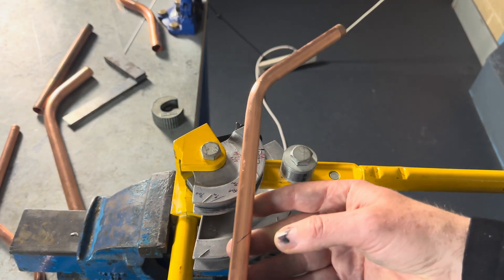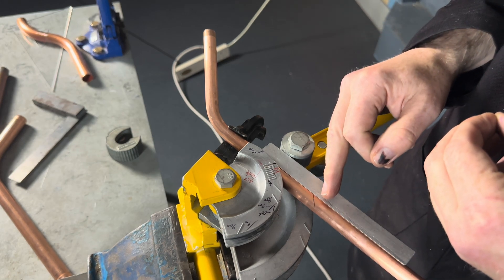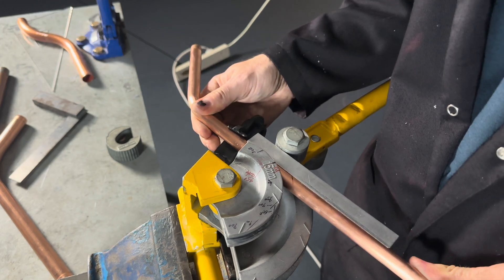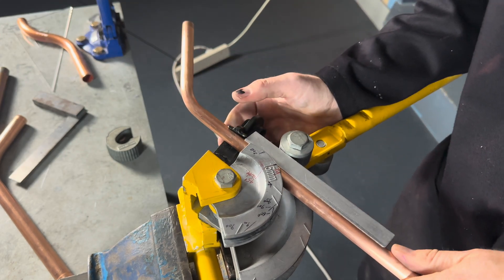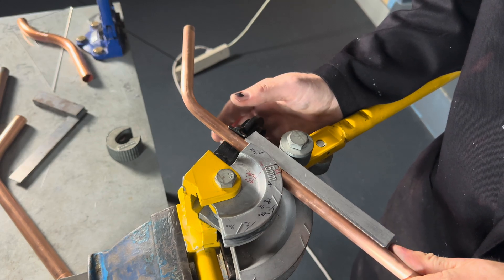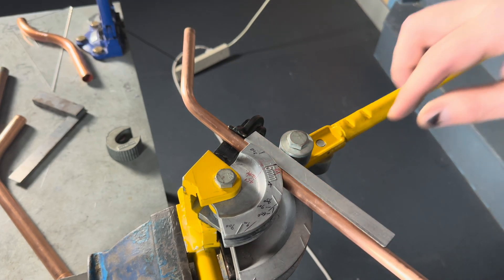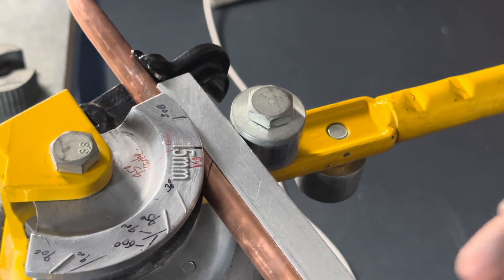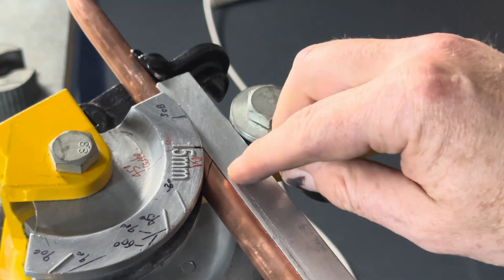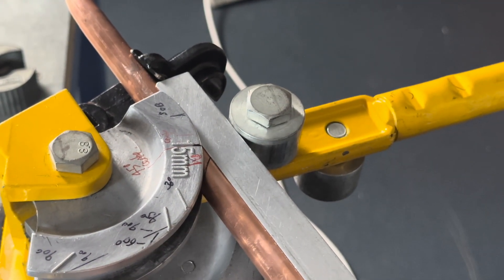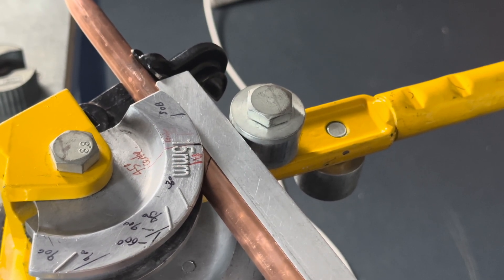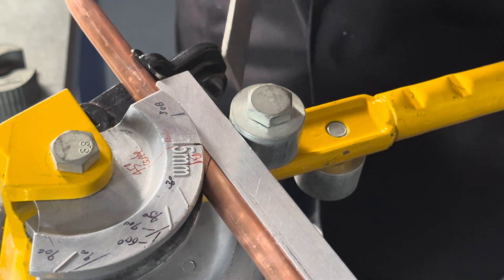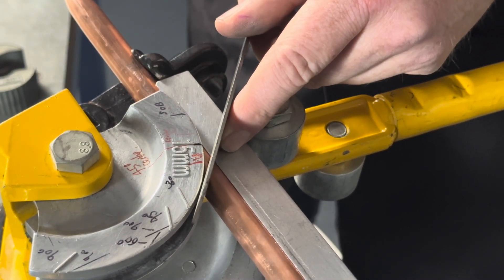If we now put our pipe back into the pipe bender. So the line that we just drew, we want touching the edge of the former. So we wiggle it along. So that's not quite touching here. You can just see a little bit of a gap there. So we're going to just do it so that the line is touching the edge, which I would say is about there.